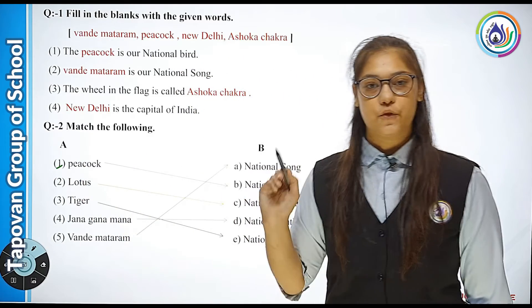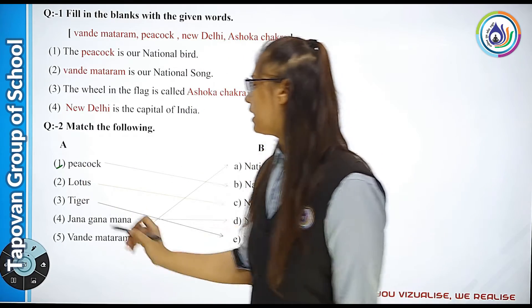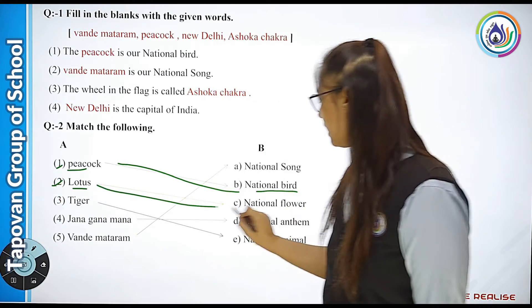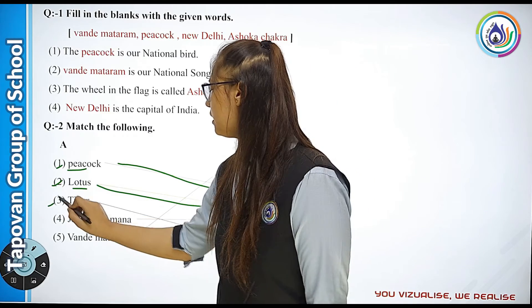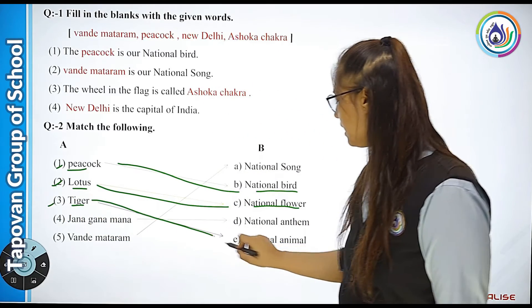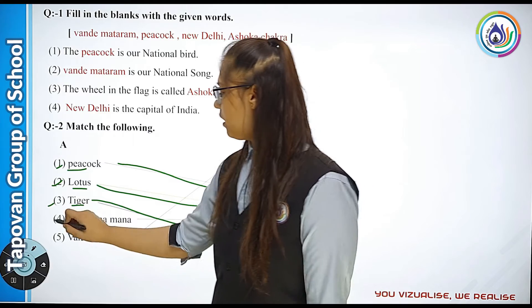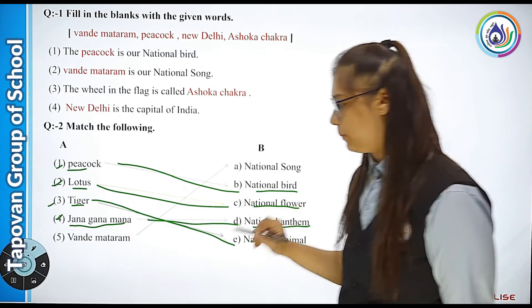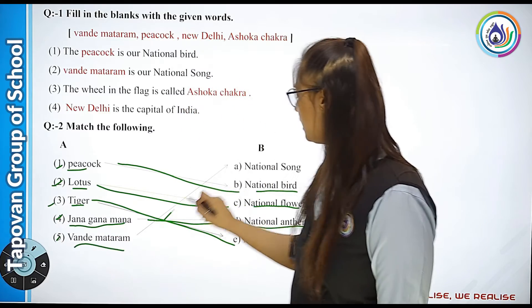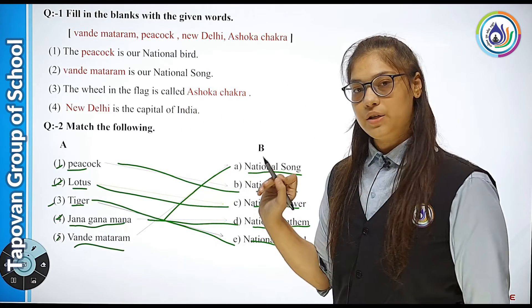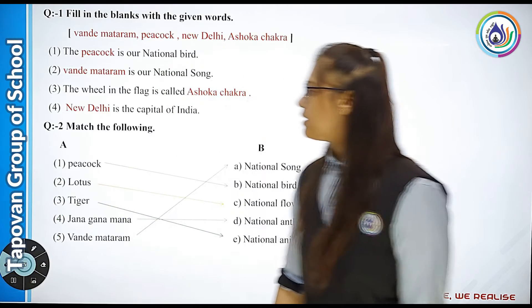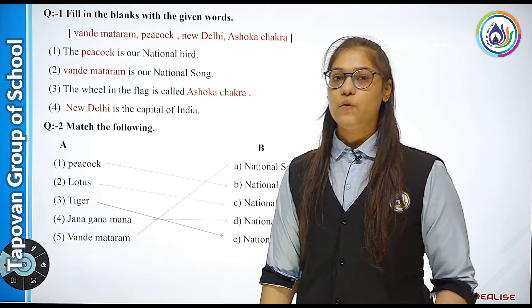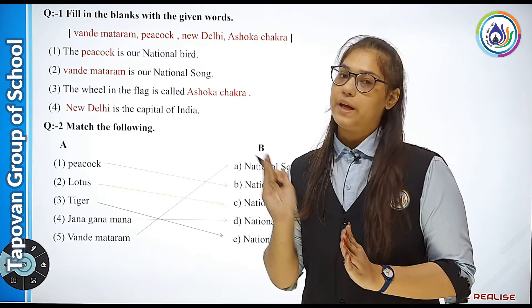Let us revise the match the following. First: National Bird. Second: National Flower. Third: National Animal. Fourth — Jana Gana Mana — what is it? National Anthem. Fifth — Vande Mataram: National Song. Please take a screenshot of these answers and write them in your book.